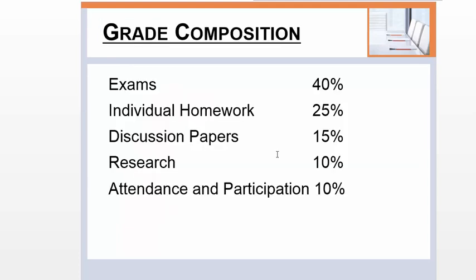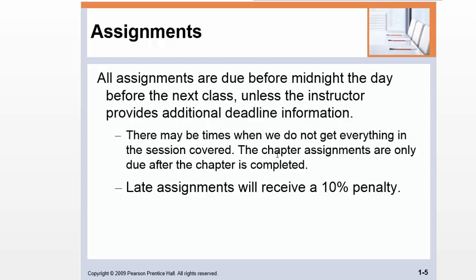Looking at the course grading: 40% will come from quizzes and exams, individual homeworks are 25%, discussion papers are 15%, research is 10%, and attendance and participation is another 10%. All assignments are due midnight the day before the next class, unless the instructor gives you additional deadline information.